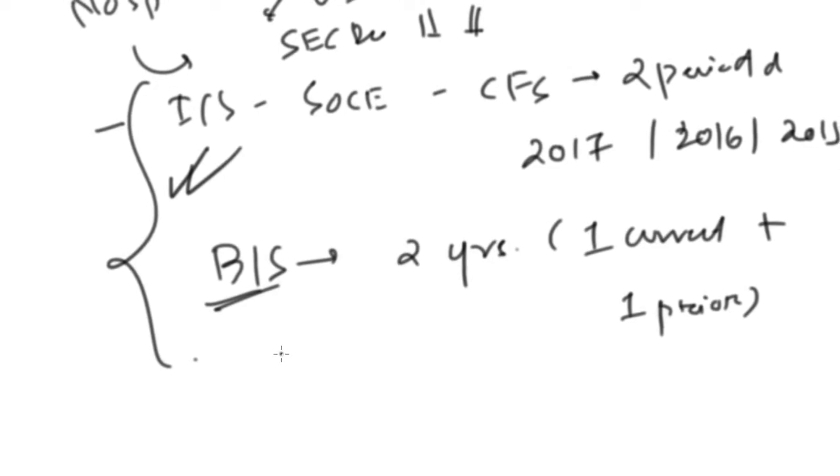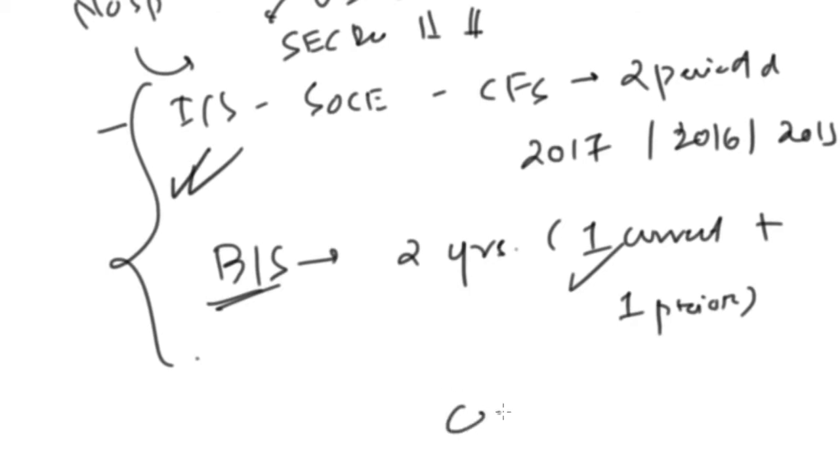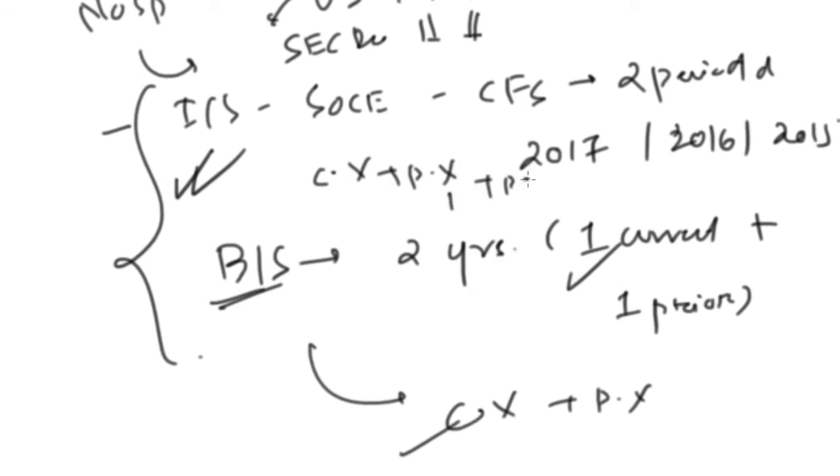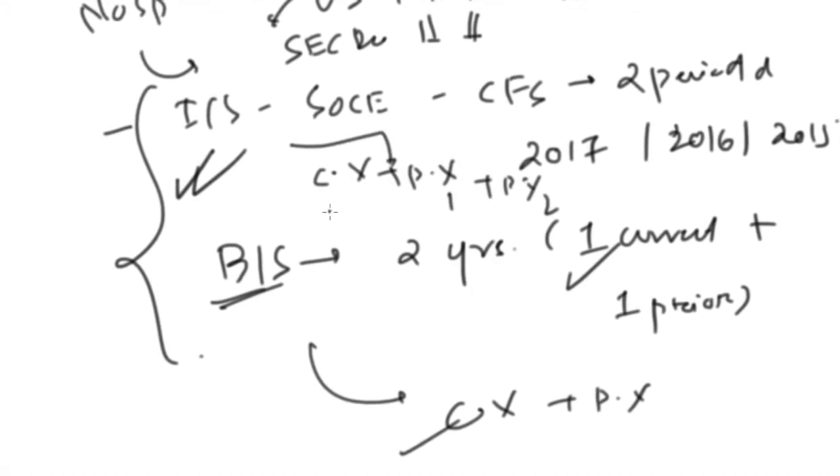And for the balance sheet, at least two periods. One period is for the current year and one for the prior year. This is for the balance sheet. This is current year plus prior year one plus prior year two. This is for the income statement.